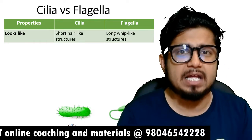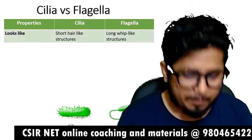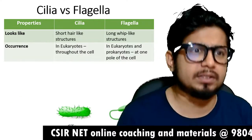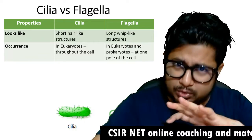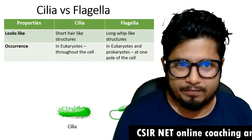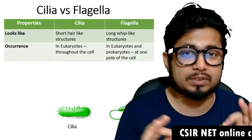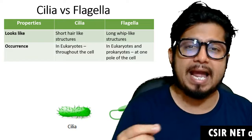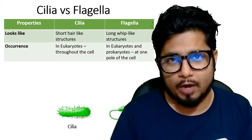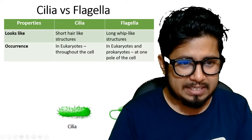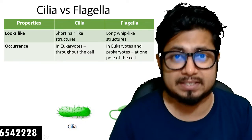Flagella looks like a really big, long, whip-like structure. The second important feature is the occurrence: in eukaryotes, cilia are found throughout the cell surface, while flagella in eukaryotes and prokaryotes both are generally localized at one pole or one end of a cell. As you can see in the picture, cilia are all over around the cell but flagella is at one terminal site.